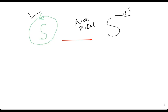Sulfur is gaining two negative electrons, meaning it is gaining two negative charges, so sulfur is going to be minus two. This is the valency of sulfur. Valency tells you about the future of an element — whenever sulfur reacts, it will become a minus two ion. The valency of sulfur is minus two, meaning whenever sulfur reacts it will accept two electrons.